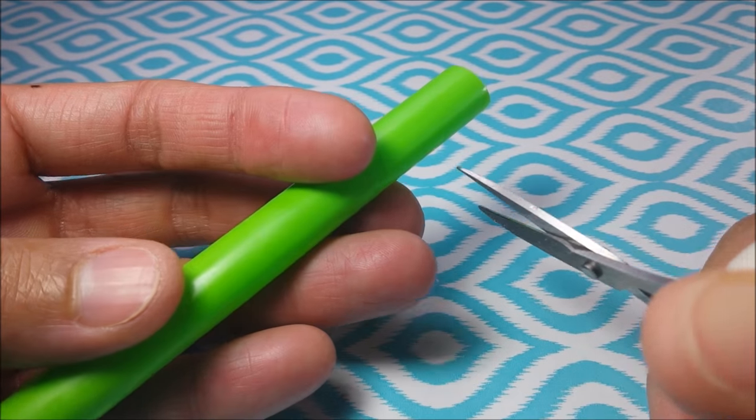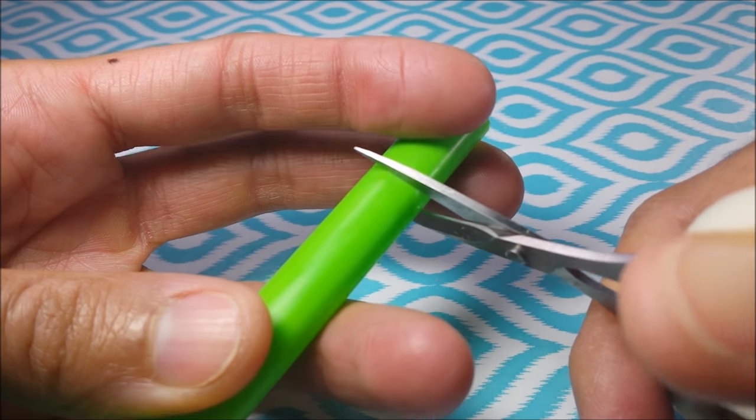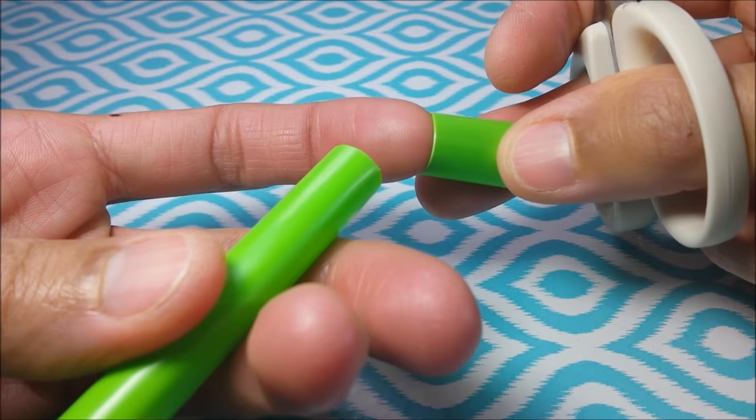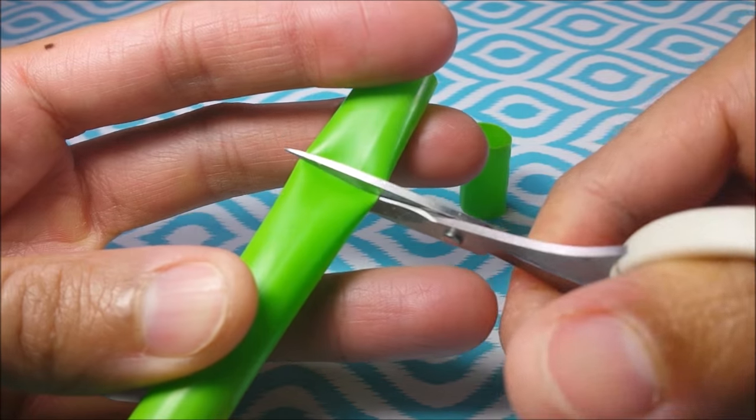For my canisters, I cut off sections of a plastic straw at varying heights. And if you find that yours crack, you can use small scissors to prevent that.